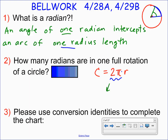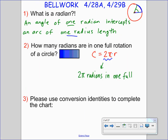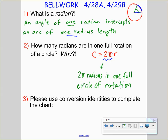Therefore, there are exactly two pi radians in one full circle of rotation. There are two pi radius lengths in one full circumference of the circle — that's the connection between radians and the circle's radius.